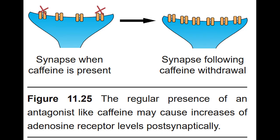Since mechanisms of tolerance result in long-lasting homeostatic changes, they may lead to withdrawal — a set of symptoms experienced when a person is abstinent from the substance. This produces a highly aversive state that can be relieved by administration of more drug. The symptoms of withdrawal are frequently the opposite of the side effects of the drug. For example, when heroin is present, a person may experience euphoria, analgesia, relaxation, and constipation. But after homeostatic changes have taken place — resulting in down-regulation of opioid receptors — a person may experience withdrawal symptoms such as dysphoria or depression, pain hypersensitivity, restlessness, and diarrhea.